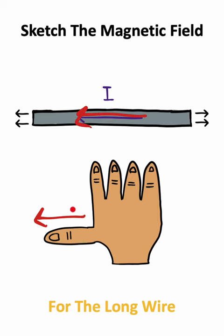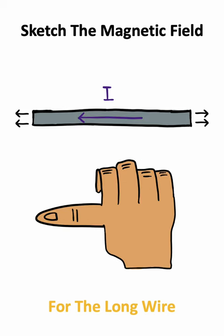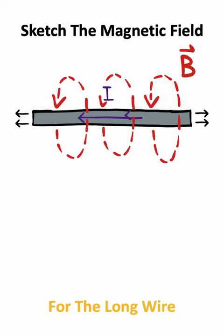Once you have your thumb aligned with the current, take your fingers and curl them inward. Basically, pretend like you're trying to grab a pencil. Once you have done this, the direction that your fingers curl is the direction of the magnetic field.